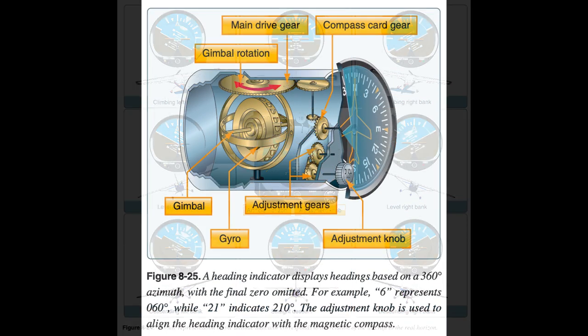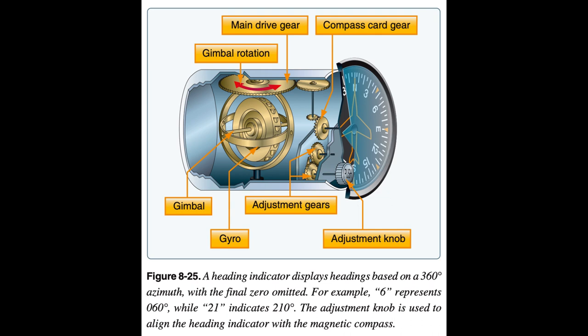The heading indicator is fundamentally a mechanical instrument designed to facilitate the use of the magnetic compass. Errors in the magnetic compass are numerous, making straight flight and precision turns to headings difficult to accomplish, particularly in turbulent air. A heading indicator, however, is not affected by the forces that make the magnetic compass difficult to interpret.